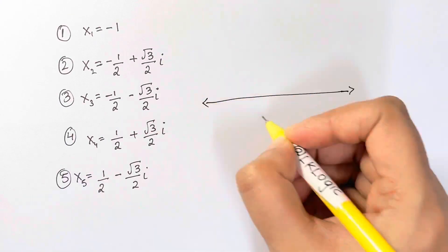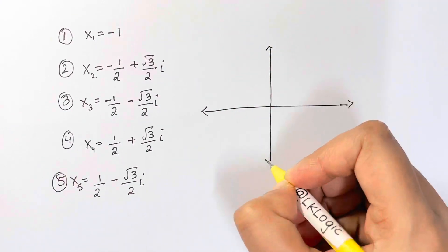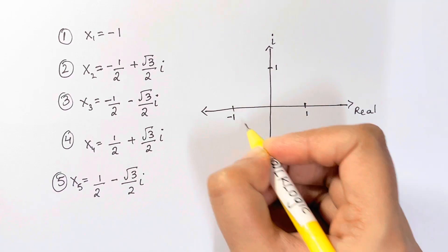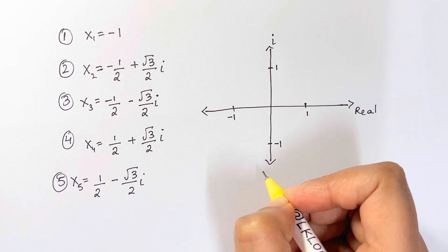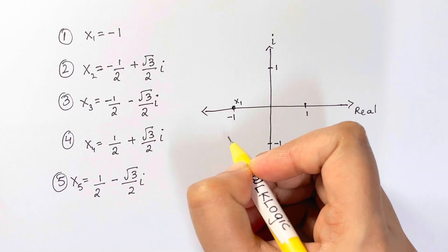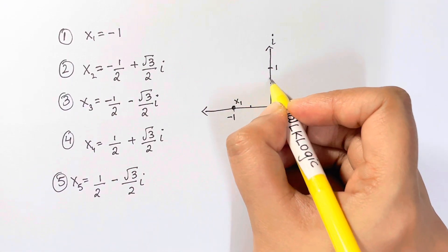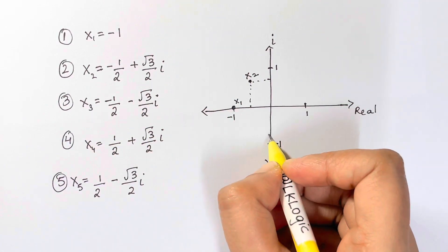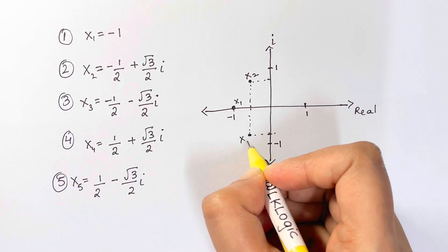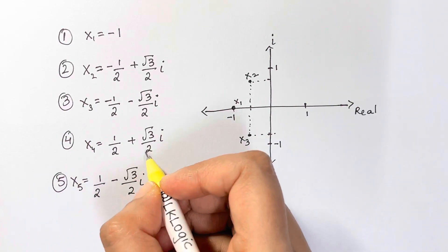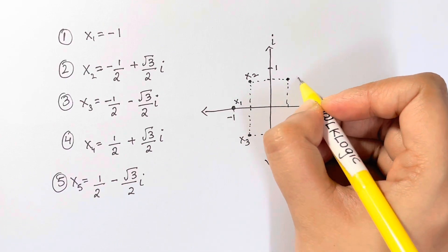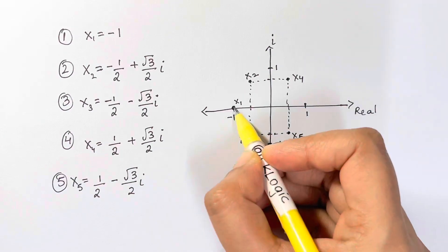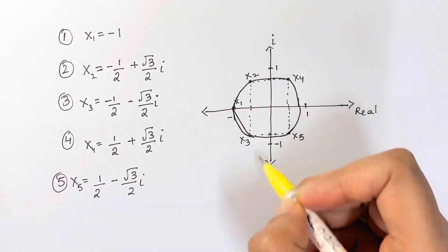Plotting these on the real-imaginary plane with coordinates at 1, -1: x₁ = -1 lies on the real axis. x₂ is at (-1/2, +√3/2), x₃ at (-1/2, -√3/2), x₄ at (1/2, +√3/2), and x₅ at (1/2, -√3/2). Joining all five points, we get a circle. Thank you, bye bye, take care.